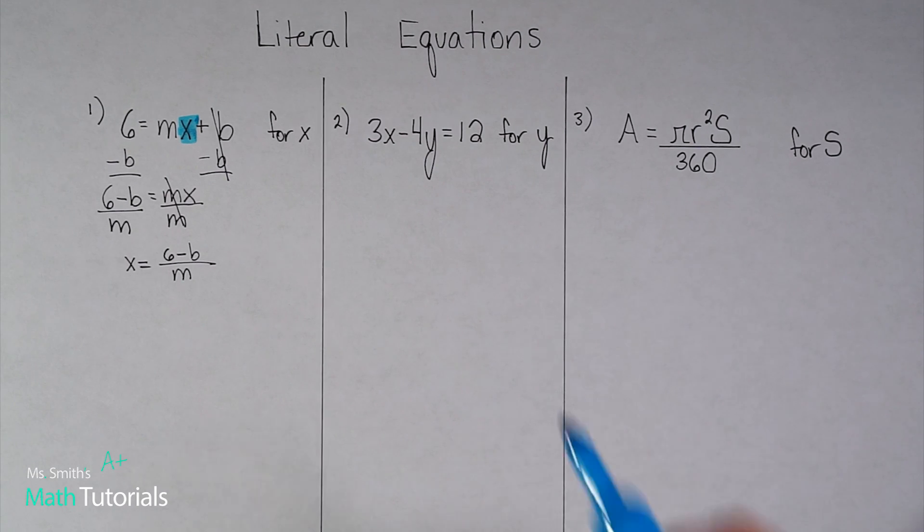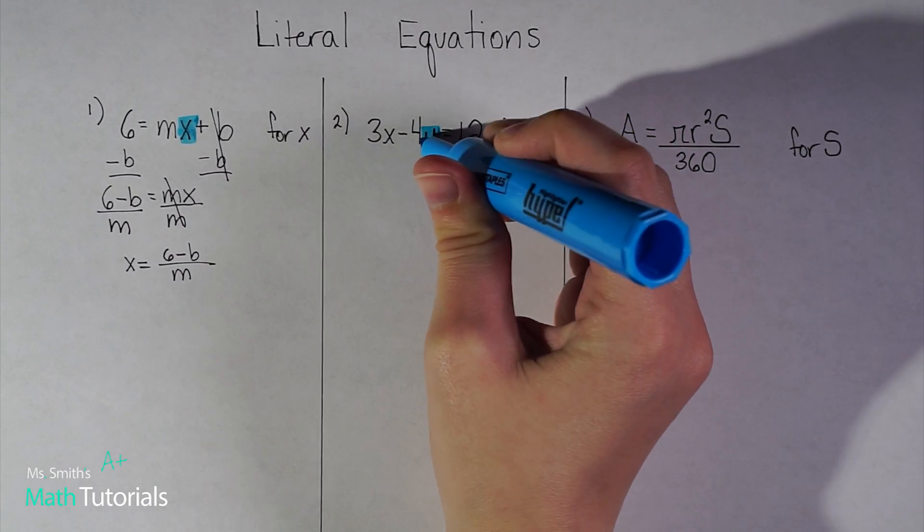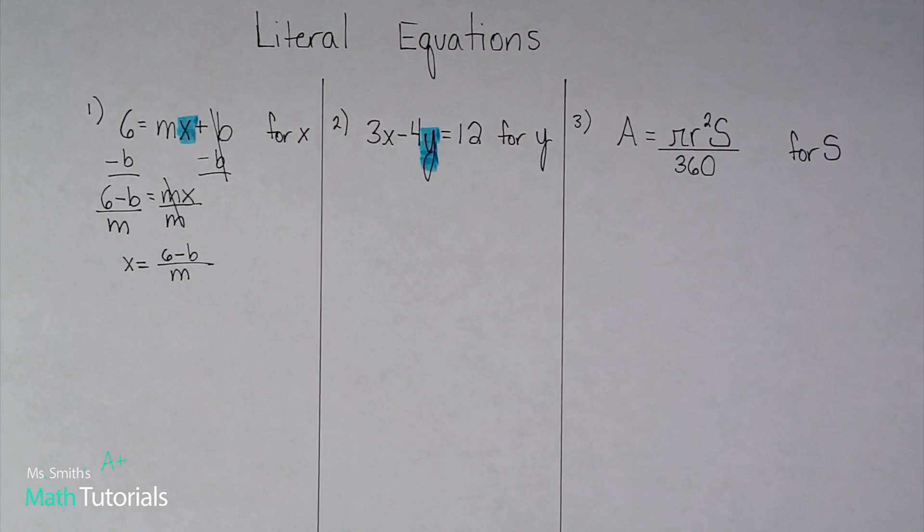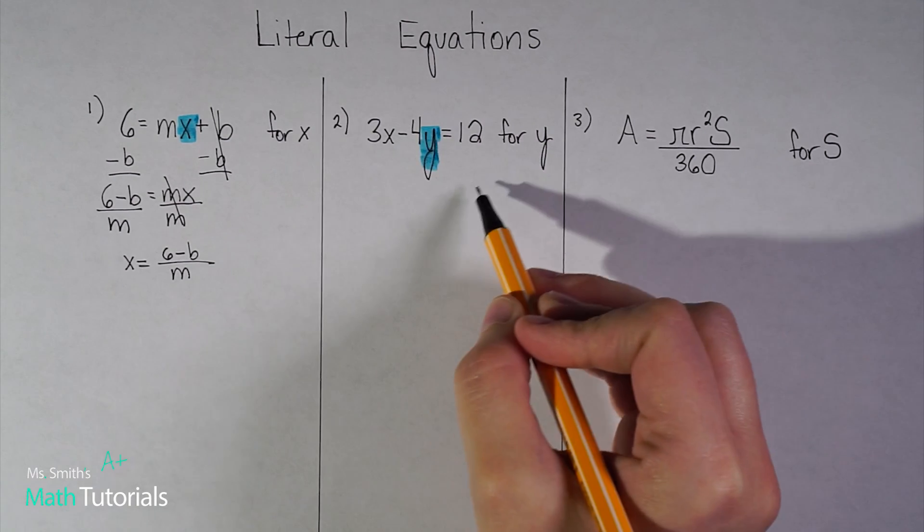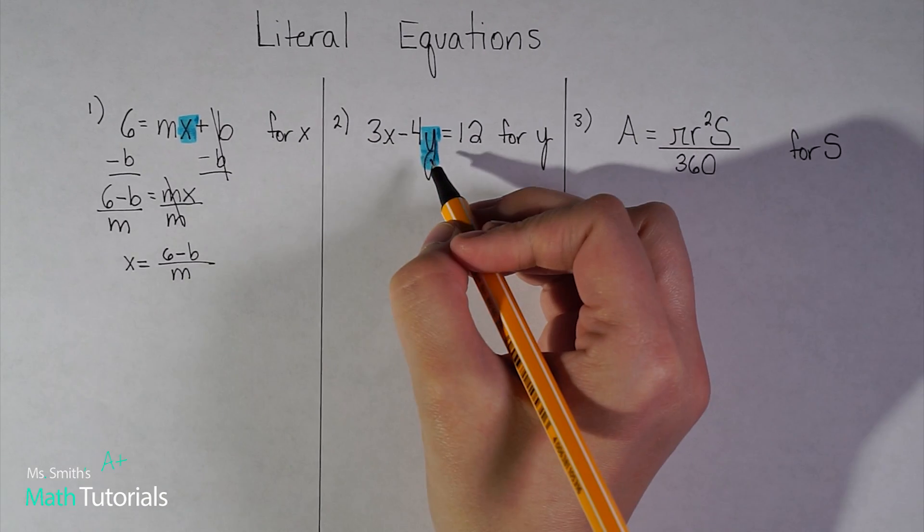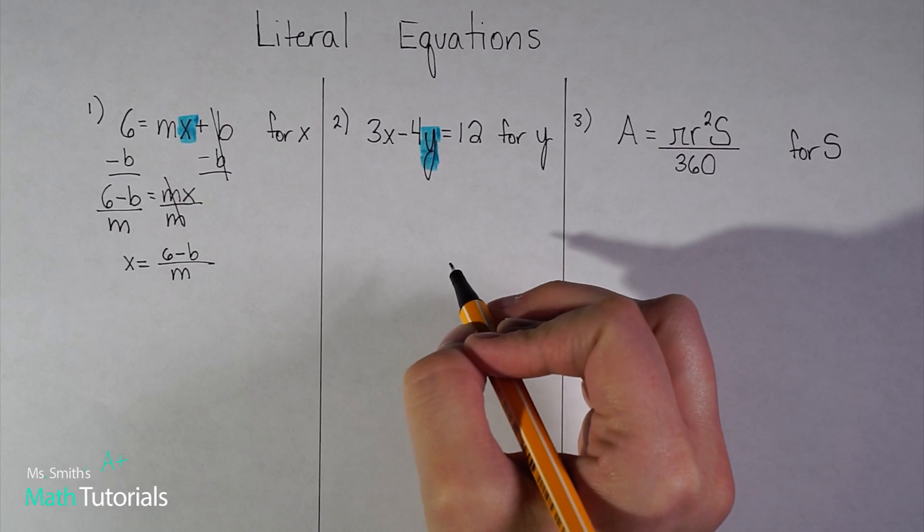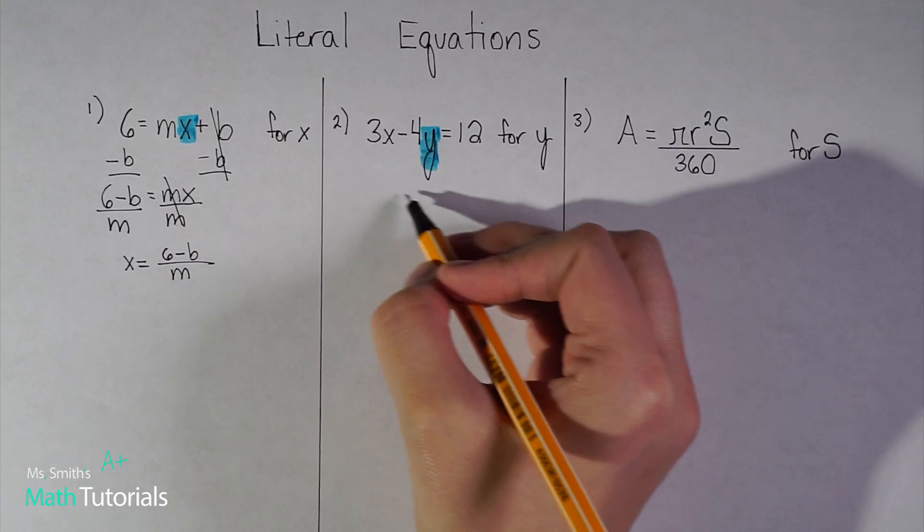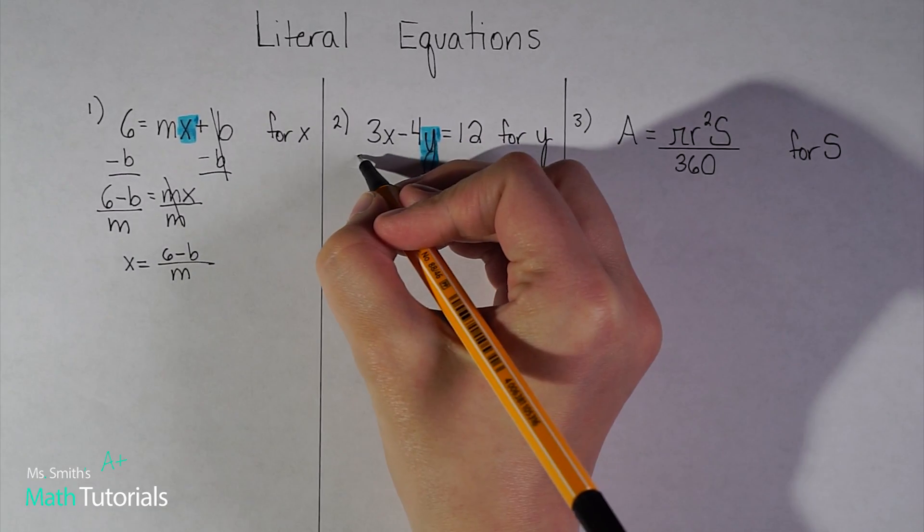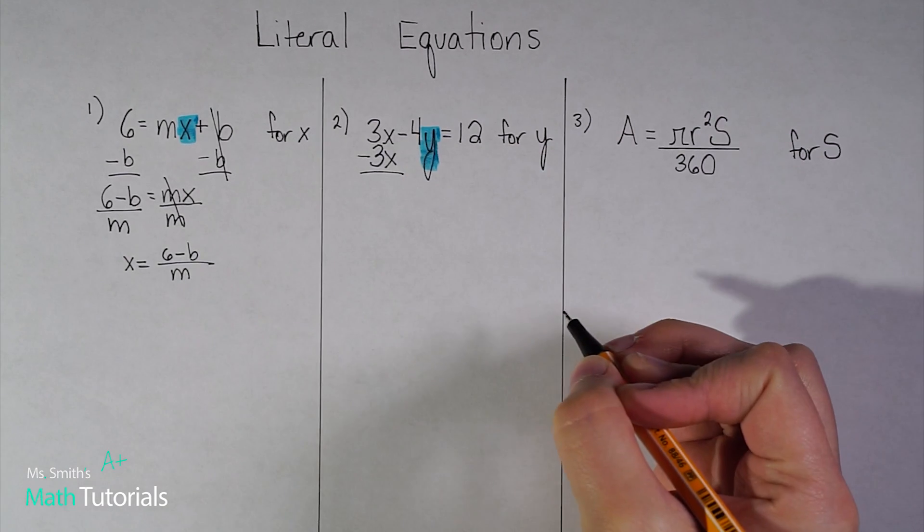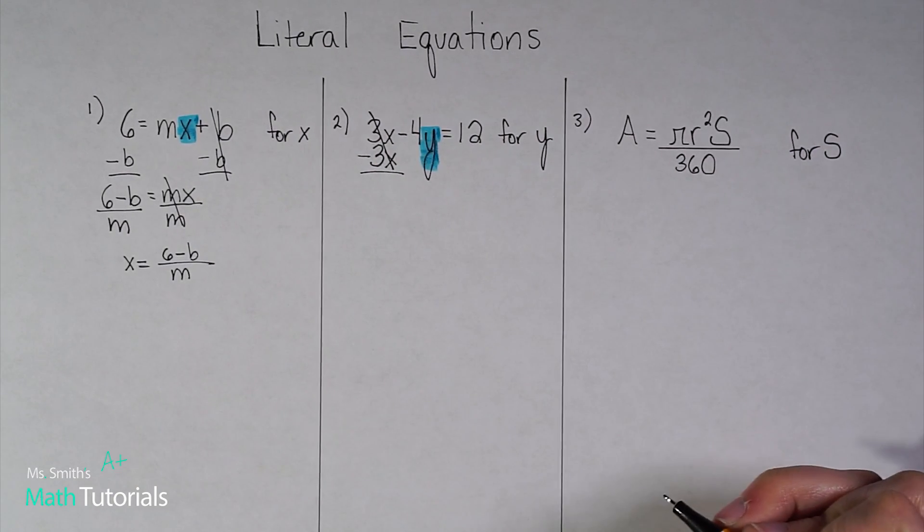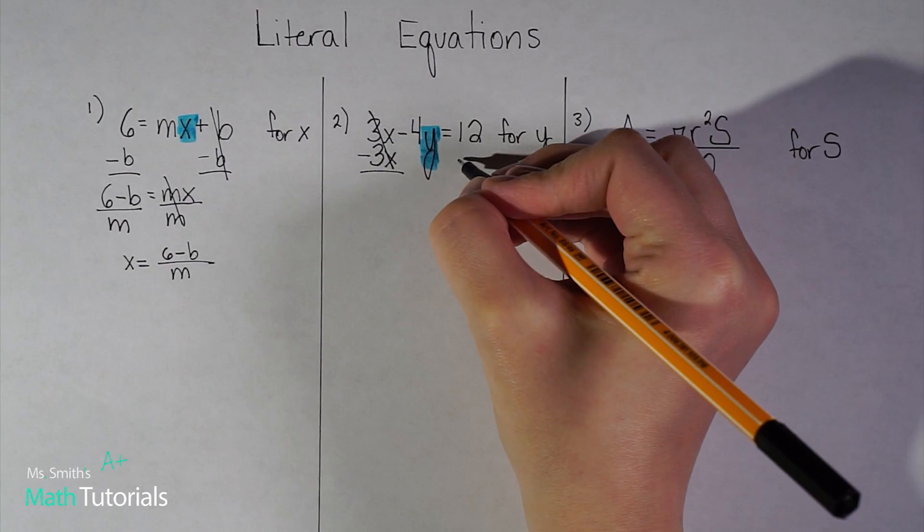And my second one, it wants me to solve this equation for y. So I'm going to just highlight my y. So remember, that's what I'm trying to get alone. So in this case, it's going to be easier, I think, to leave the variable on the left side and get everything else on the right. So instead of trying to separate this negative four and y first, let's move this 3x over. Let's just keep it simple. So this is a plus 3x, so I want to do the inverse. I want to subtract 3x. I want that to cancel to zero. What I do to this side of the equation, I have to do to this side.